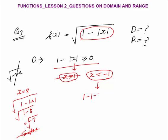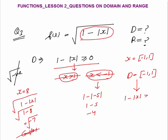If I put x = minus 5, that gives 1 minus 5, which is not greater than 0. So I can't put x less than minus 1. What range can I put? I can't put less than minus 1 and I can't put greater than 1. So the valid range for x is minus 1 to 1, including all values in between. The domain is minus 1 to 1. You can put any values between minus 1 and 1 — 1 minus mod x will be positive for all these domain values. You can put x = 1 by 3, minus 1 by 3, 1, or minus 1 — all valid.